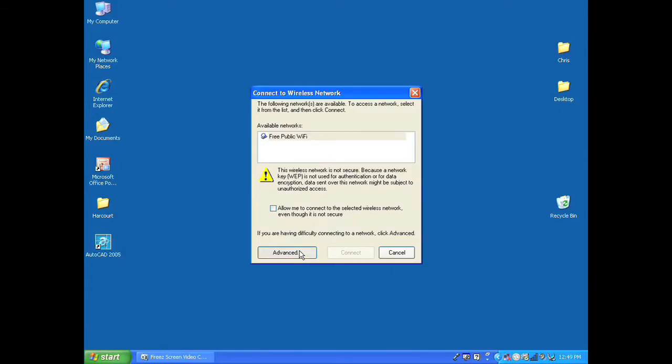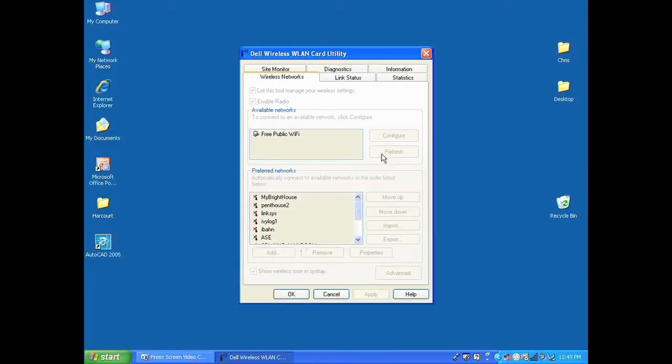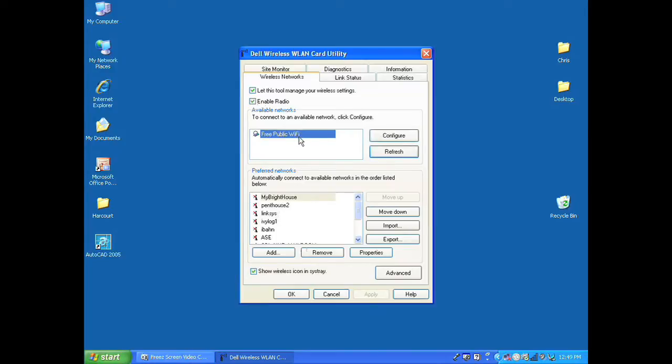You can choose advanced and then refresh to search for available wireless networks. These can either be public Wi-Fi access networks or even private wireless networks.